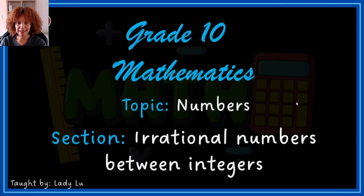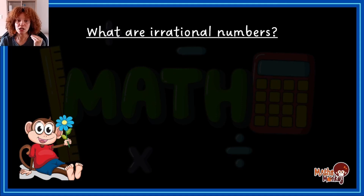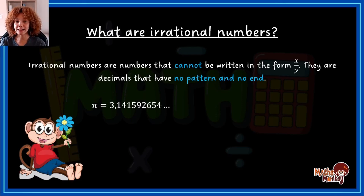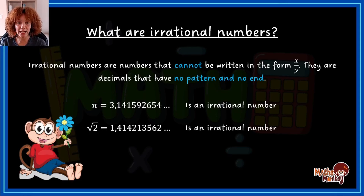Alright, Grade 10s, welcome to this video on numbers — specifically looking at irrational numbers between integers. Before we start, I want to make sure you understand what an irrational number is. An irrational number is a number that cannot be written as a fraction, and its decimal values have no pattern and no ending. For example, pi is 3.14159265... and it continues. The square root of 2 is 1.4142... — again, no pattern, no ending.